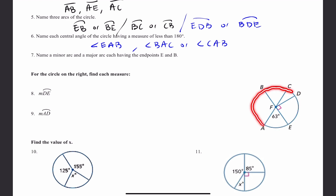This here is arc AD. To figure out how long this arc is, you look at the central angle. You can see this angle is 63 degrees and this angle is 90 degrees. Add those two numbers and that's how long this arc is.